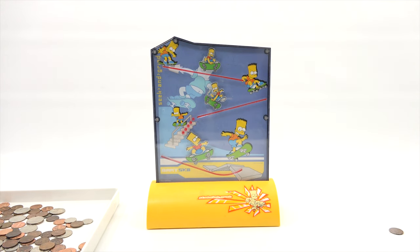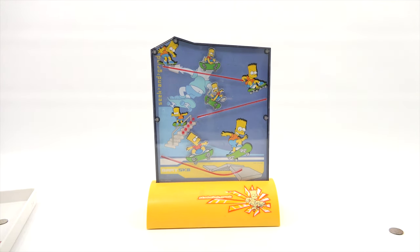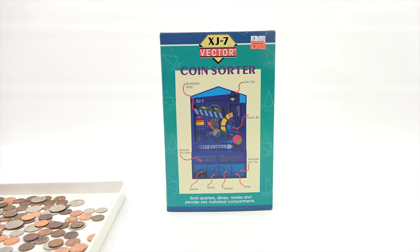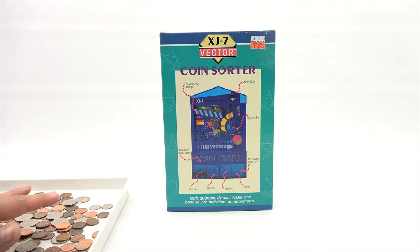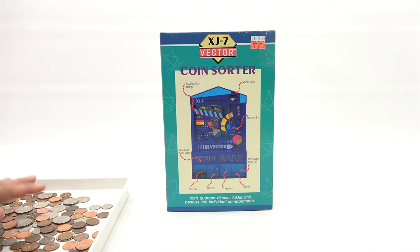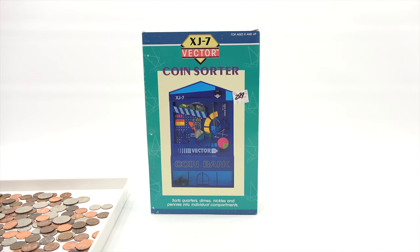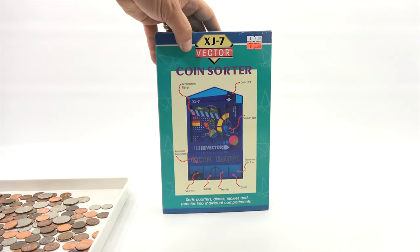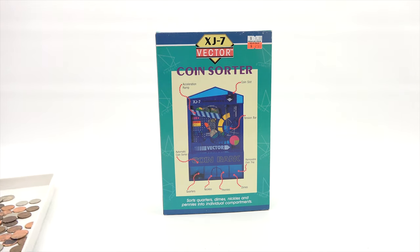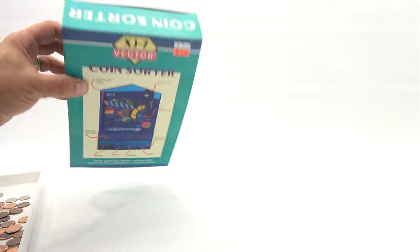Last but not least, I'm ready to see how this one works. The XJ7 Vector Coin Sorter. This sounds pretty official - acceleration ramp, coin slot, tension bar, automatic coin sorter, then you do quarters, nickels, pennies, dimes. Removable tray at the bottom sorts them all into individual compartments. It was originally $6.99 marked down to $2.99. I bought this at like a little mom and pops gift shop. Let's get this out of the box.